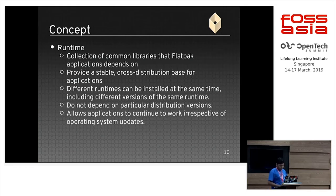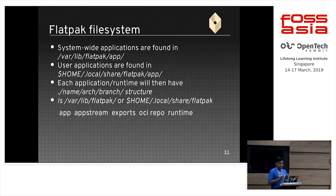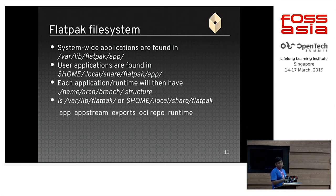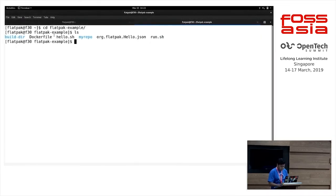You can install an application either system-wide or per-user. If installing system-wide, the path is /var/lib/flatpak/app. If installing as a user, it goes into your home directory under ~/.local/share/flatpak/app. Each application or runtime will have a further directory structure: after the app path, there is a name in dotted format — for example, let me show you /var/lib/flatpak/app.